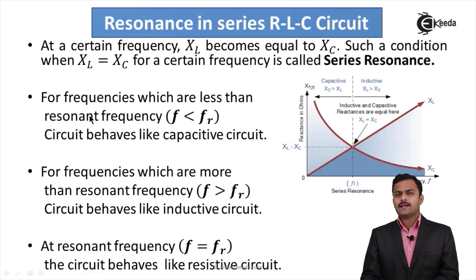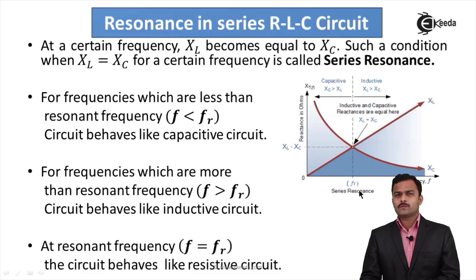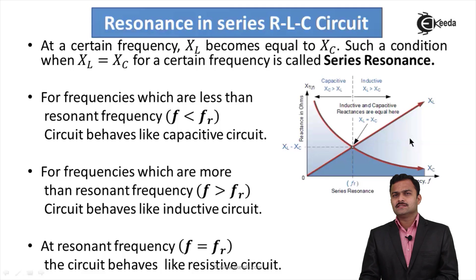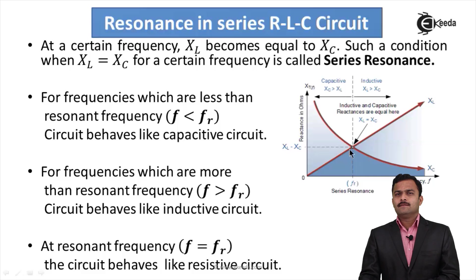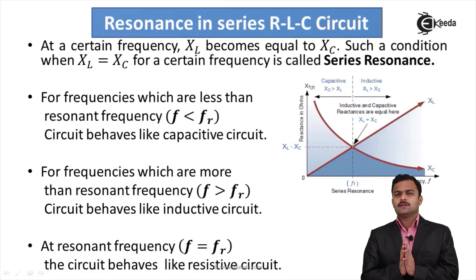For frequencies less than the resonating frequency, XC has higher values compared to XL, so the circuit has a capacitive nature. Beyond the resonating frequency, XL is greater than XC, so the circuit behaves like an inductive circuit because L is the dominating factor. But at the resonating frequency, both XL and XC are equal, and the circuit is resistive in nature.